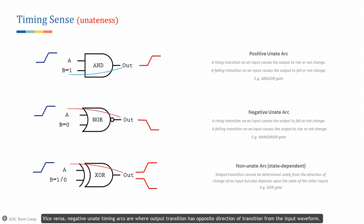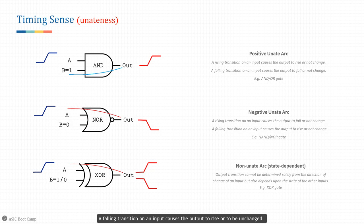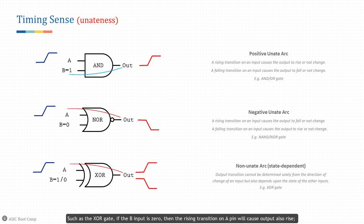Negative unate timing arcs are the ones where the output transition has the opposite direction from the input waveform — a rising transition on an input causes the output to fall or to be unchanged. Non-unate arcs are ones whose output transition cannot be simply determined by a single input; the output also depends on the state of other inputs, such as the XOR gate. If B input is zero, a rising transition on A causes output to also rise; if B is one, the rising transition on A causes output to fall.